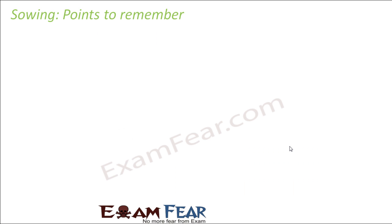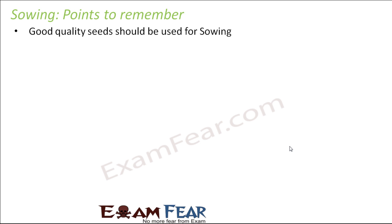Now, some points which you need to remember while sowing: first, good quality seeds should be used for sowing. The type of seeds you provide is the type of plant you will get. If you provide bad quality seeds you will get bad plants later; if you have good quality seeds you will get good quality plants later.